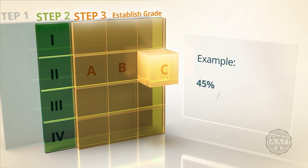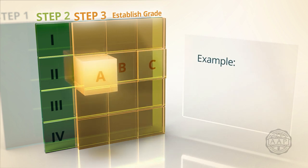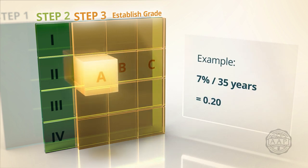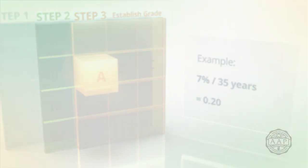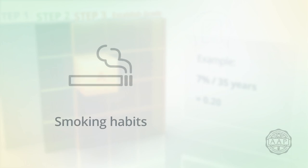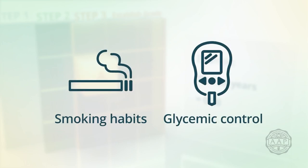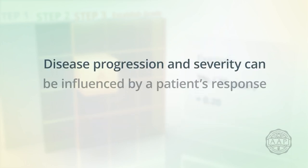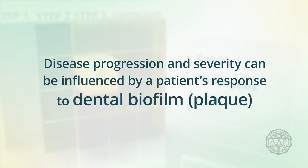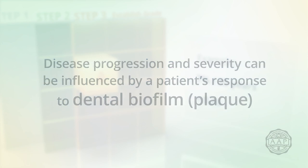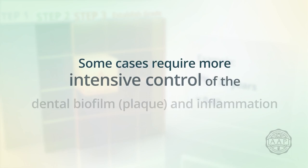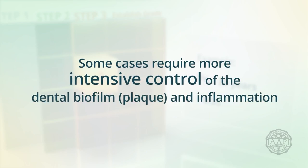If the patient's ratio is greater than 1, then grade C is assigned. In contrast, if the ratio is less than 0.25, then grade A is assigned. In addition, you should assess grade modifiers such as smoking habits and glycemic control. Disease progression and severity can be influenced by a patient's response to dental biofilm. Moreover, some cases require more intensive control of the dental biofilm and inflammation than others.